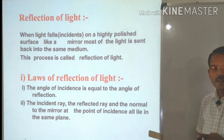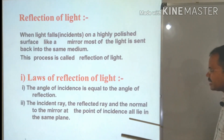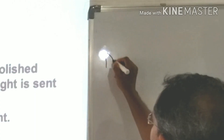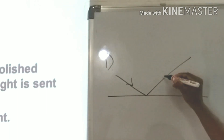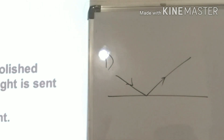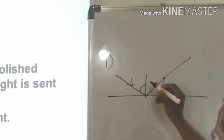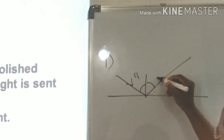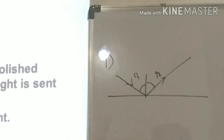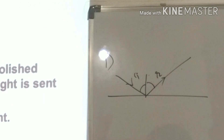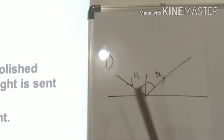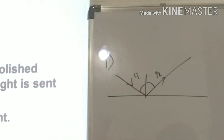Next, let us understand the laws of reflection of light. First point: the angle of incidence and angle of reflection are equal. Second point: the incident ray, reflected ray, and the normal all lie in the same plane — it is not possible for the incident ray to be in one medium, the normal in a second medium, and the reflected ray in a third medium. All three are in the same plane.